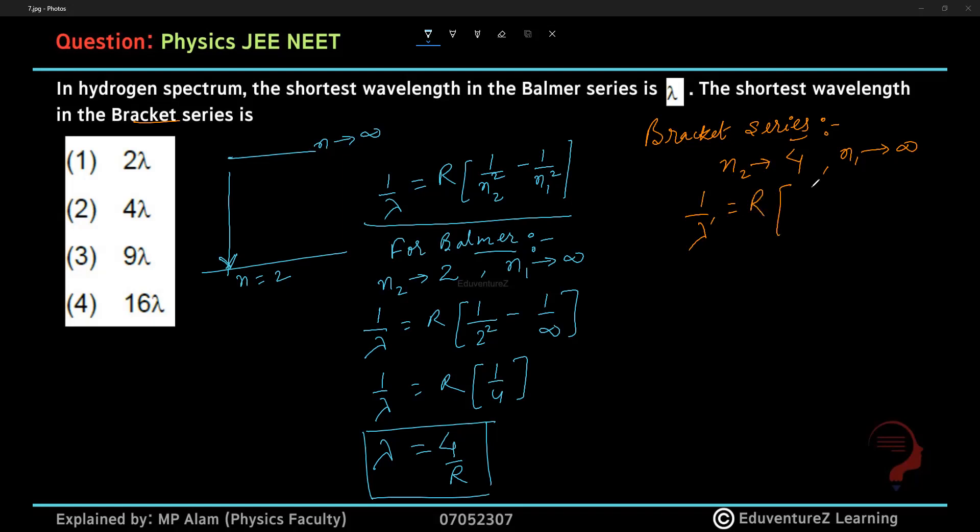1 by lambda dash equal to R 1 by 16 minus 0. Reciprocal gives lambda dash equal to 16 by R. From the equation, R equals 4 by lambda, so substituting, lambda dash becomes 4 lambda. So option B is correct.